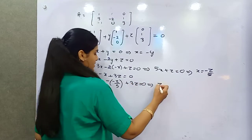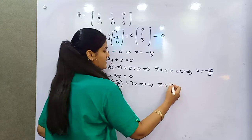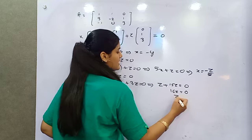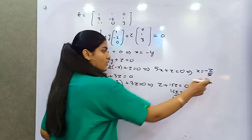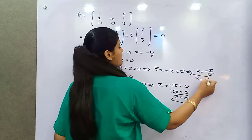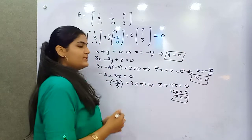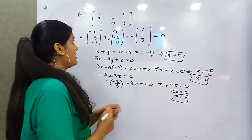Now from here, Z plus 15Z equals 0, so Z is 0. Z is 0, that means X is 0. If X is 0, that means Y is 0. Then it means you can say that this matrix is linearly independent.